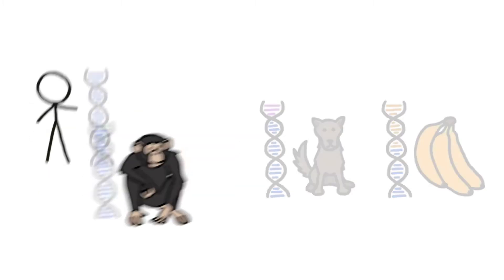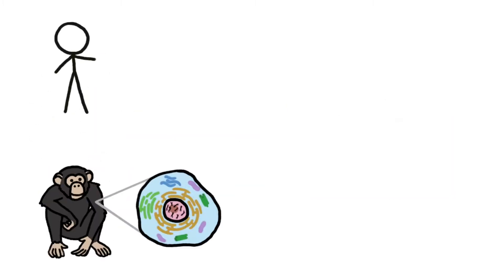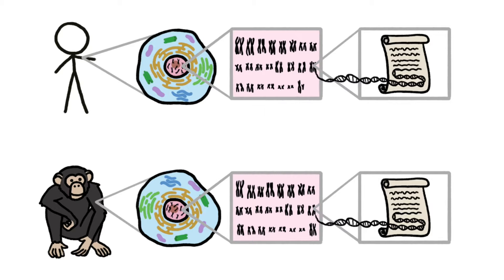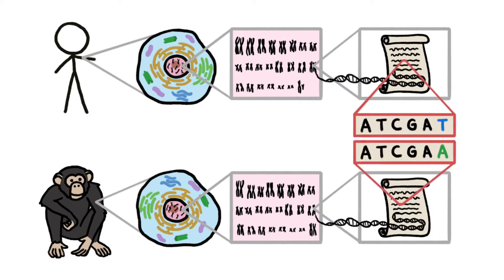Taken literally, those numbers make it sound like we could pluck one cell from a chimp and one from a human, pull out the tangled bundles of DNA known as chromosomes, unroll each one like a scroll, and read off two nearly identical strings of letters.